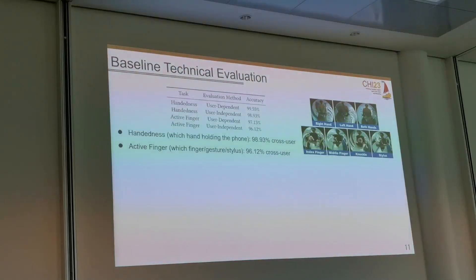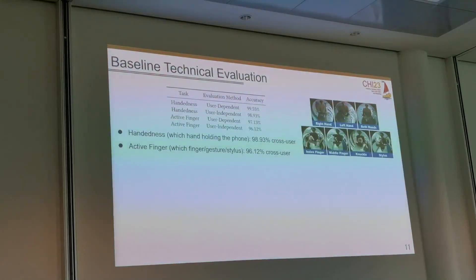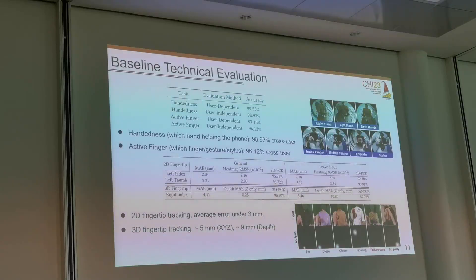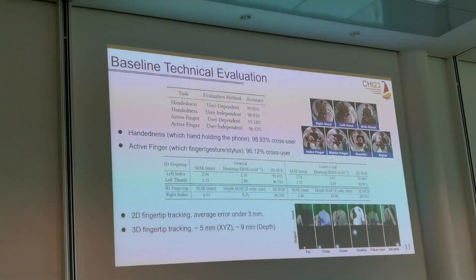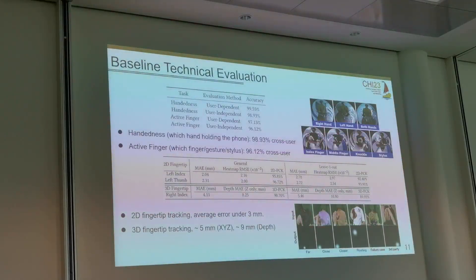Here we show some evaluation results. In terms of handedness classification and gesture recognition, our model achieves 98% accuracy for cross-user handedness detection and 96% accuracy for classifying active finger, gesture, or status. In terms of finger tracking, we achieve an average error of less than 3mm for 2D tracking and less than 5mm for 3D tracking. Even for depth estimation, the average error did not exceed 9mm across different users with different finger sizes and shapes.